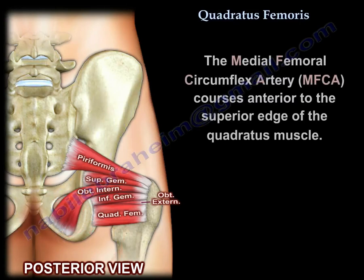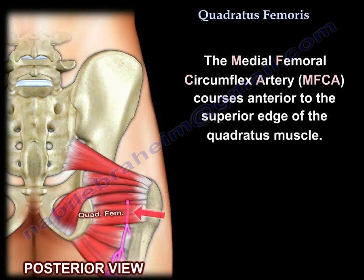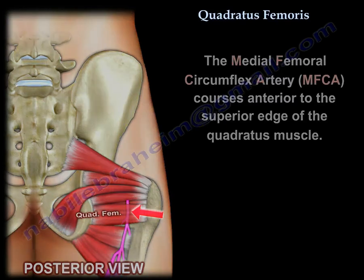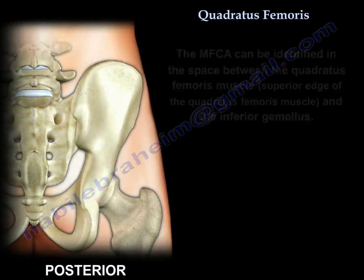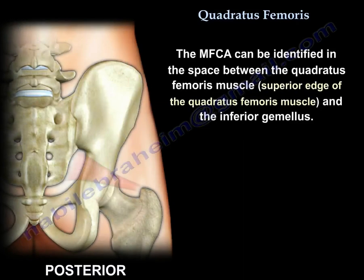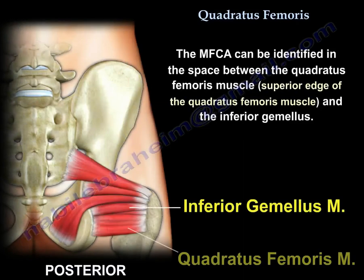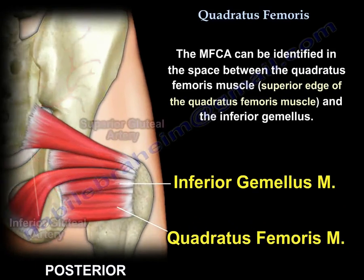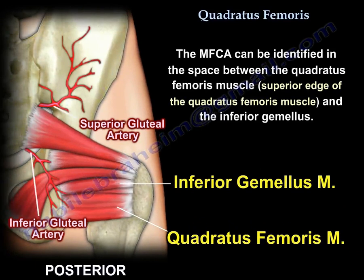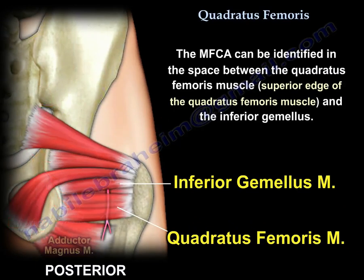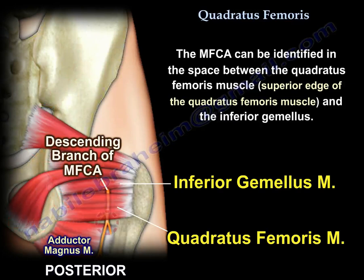The medial femoral circumflex artery courses anterior to the superior edge of the quadratus muscle. It can be identified in the space between the superior edge of the quadratus femoris muscle and the inferior gemellus.